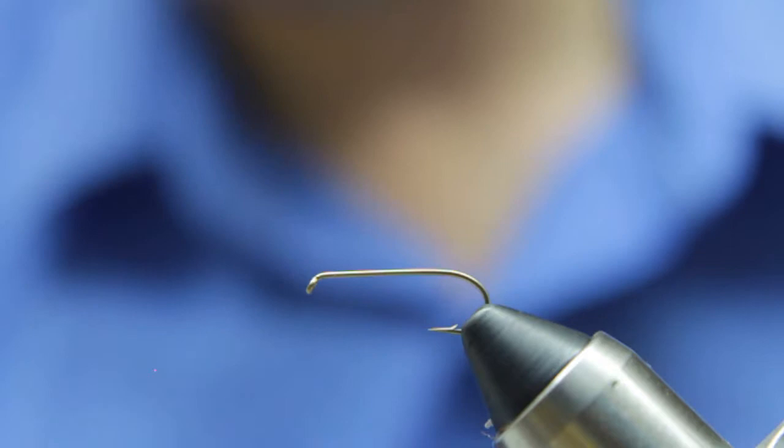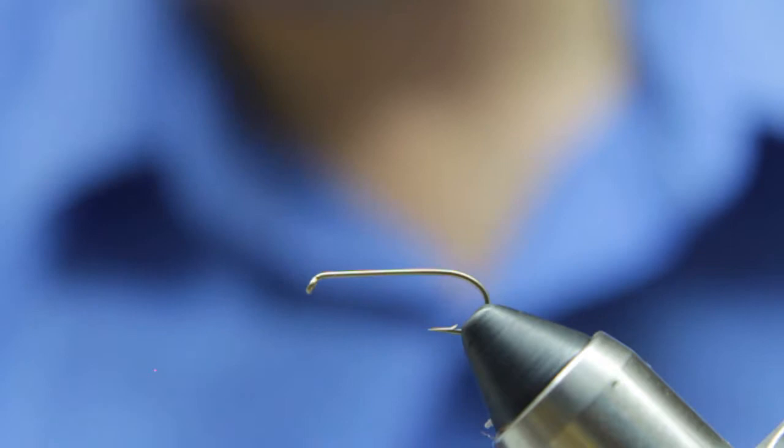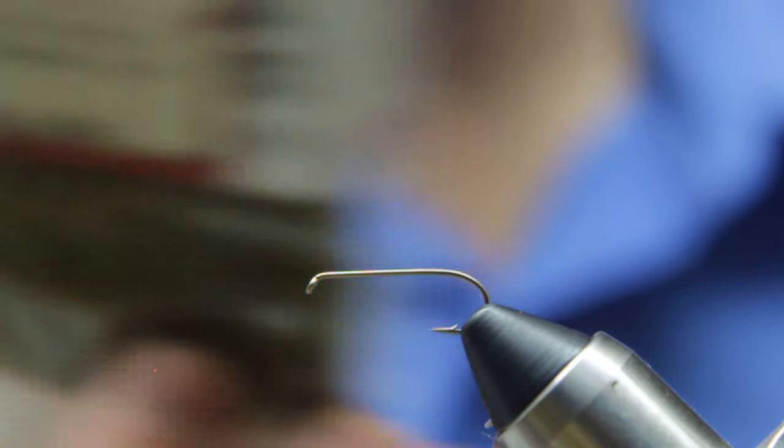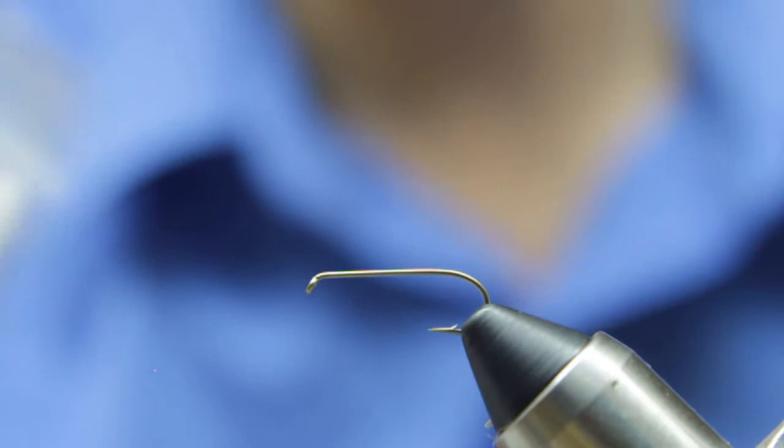This is a pretty simple fly. There's not very many materials. For the tail we're going to be using Antron yarn. This is a claret color. For the abdomen, just some standard olive chenille. For the thorax, we're going to be using warm standard olive chenille.